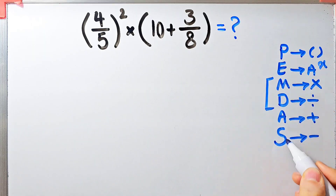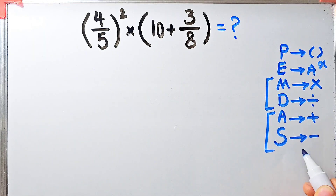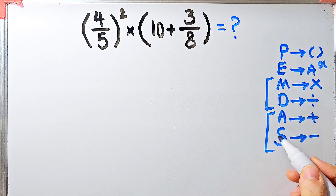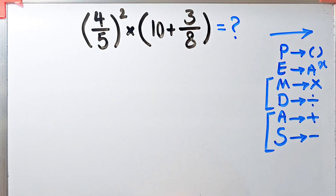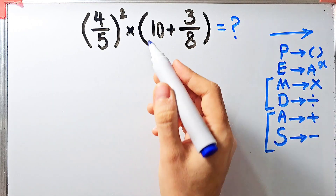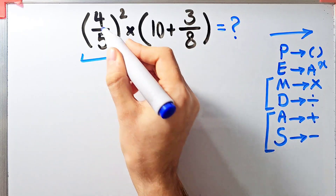A stands for addition and S stands for subtraction. Multiplication and division have the same level of priority. Also, addition and subtraction have the same level of priority. When we have both in an expression, we start from the left and simplify according to the PEMDAS rule.